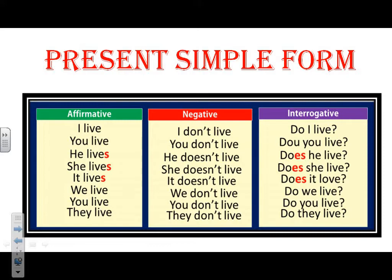Let's move to the interrogative or question form. In the interrogative, I ask the question with do or does. I start the sentence with do or does, then the subject, then the verb in the infinitive. Like the examples: do you live? does he live? does she live? do we live? And so on.